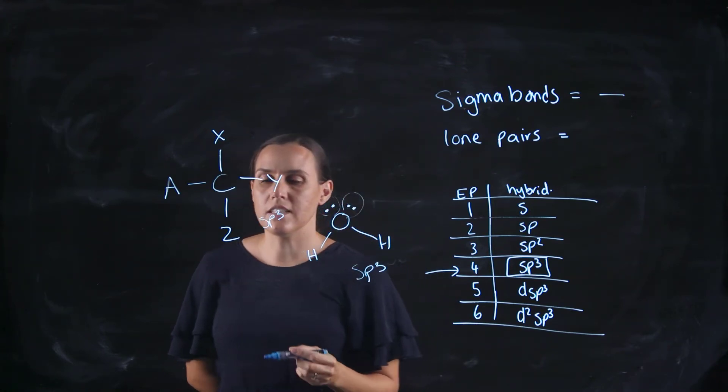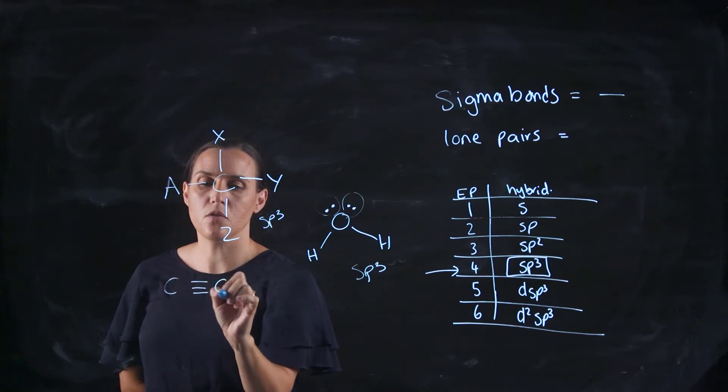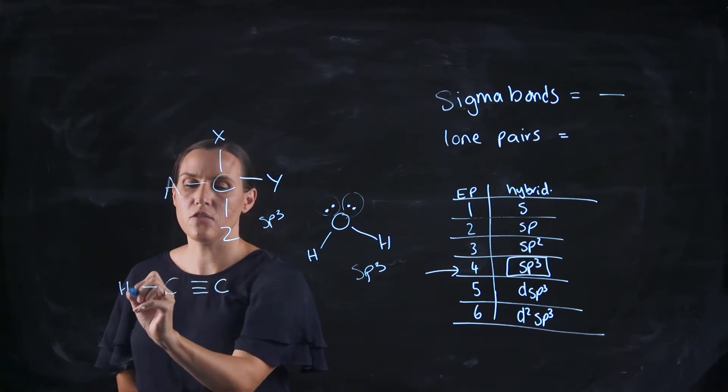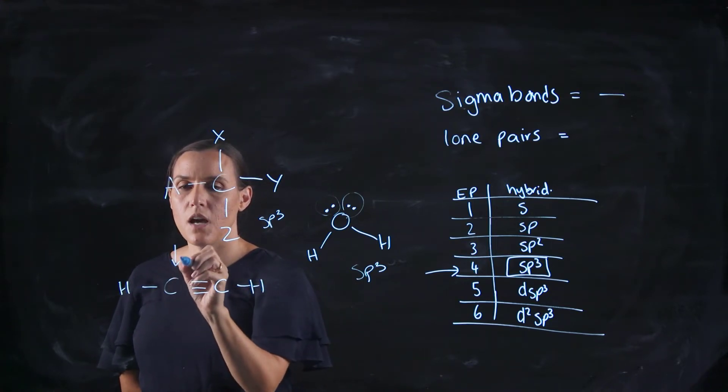Let's have a look at an example where I've got a carbon that's triple bonded to another carbon and let's say there's 2 hydrogens.